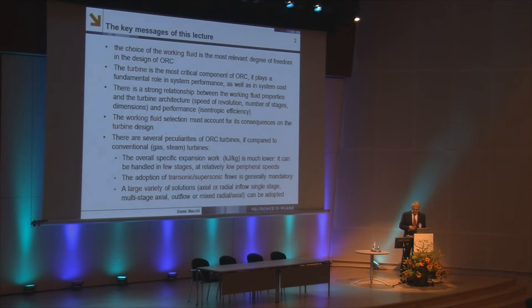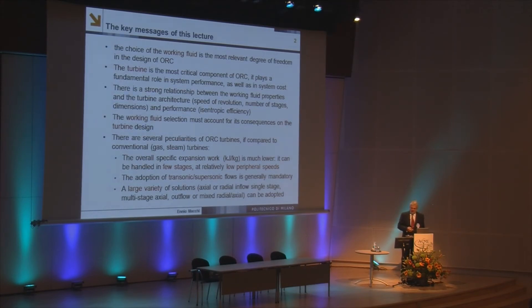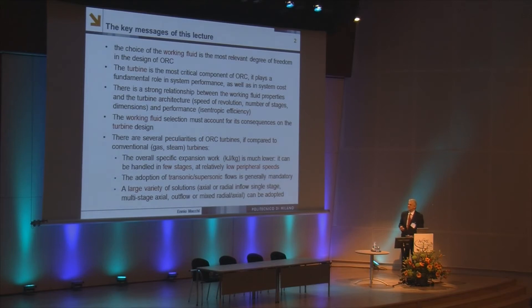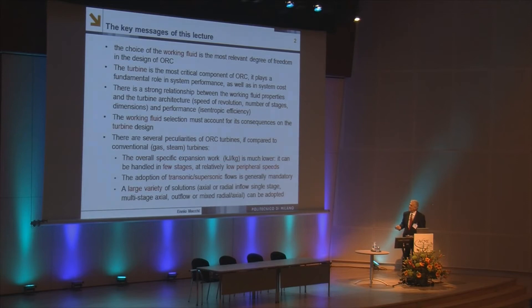And the turbine is the most critical component of the organic Rankine cycle. If you have a good turbine, you can have a good system performance and maybe also a competitive system cost. The relationship among the turbine and the working fluid is very relevant. If you choose a certain fluid, you have a certain optimum speed of revolution, and you can decide the number of stages and the dimension of the turbine.